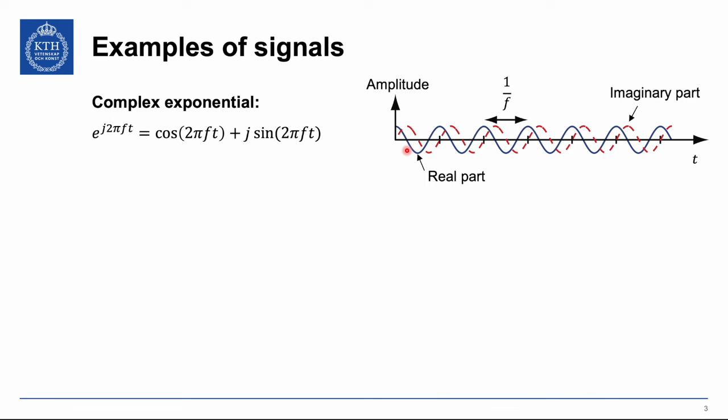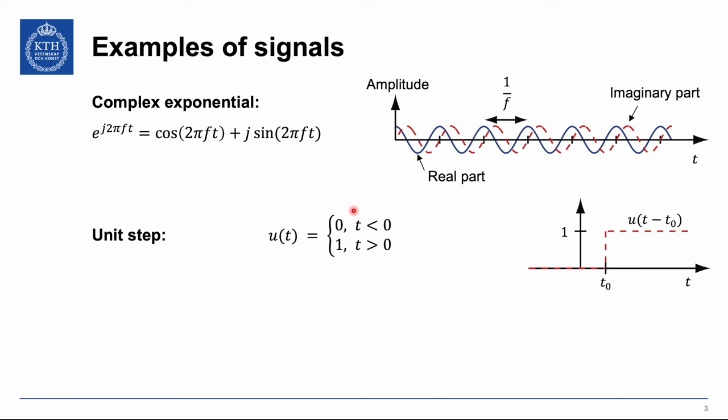When analyzing systems we will instead look at some other signals. The unit step function u of t is something that is 0 before time 0 and 1 after time 0, and it jumps between these two values exactly at time 0. If we shift the argument like u of t minus t0, then t0 is now the time when it shifts between being 0 and 1, and we can illustrate the function like this in terms of time. As you can see, something abruptly changes at time t0, or at time 0 in the original definition of the unit step.